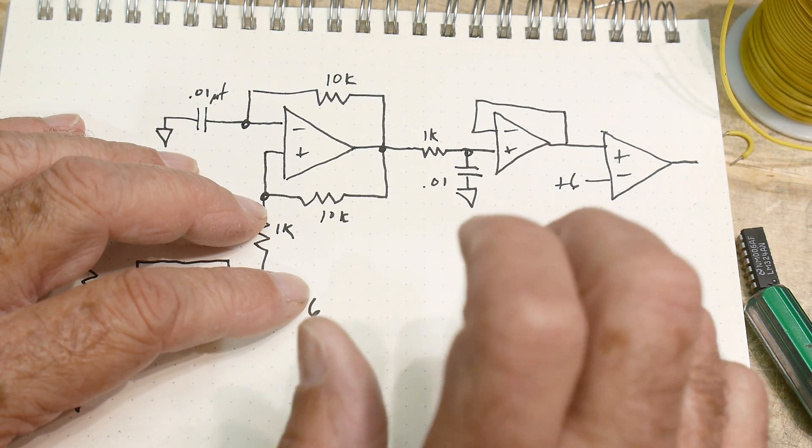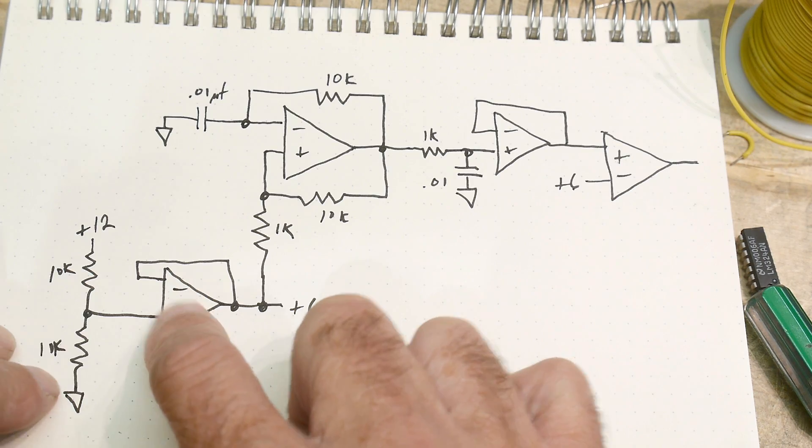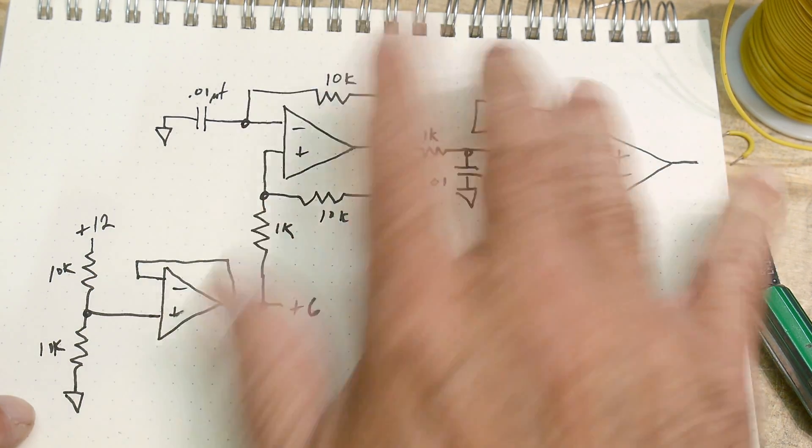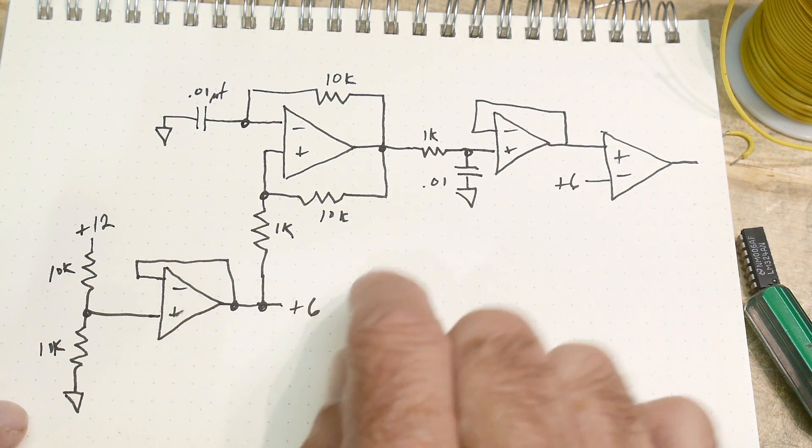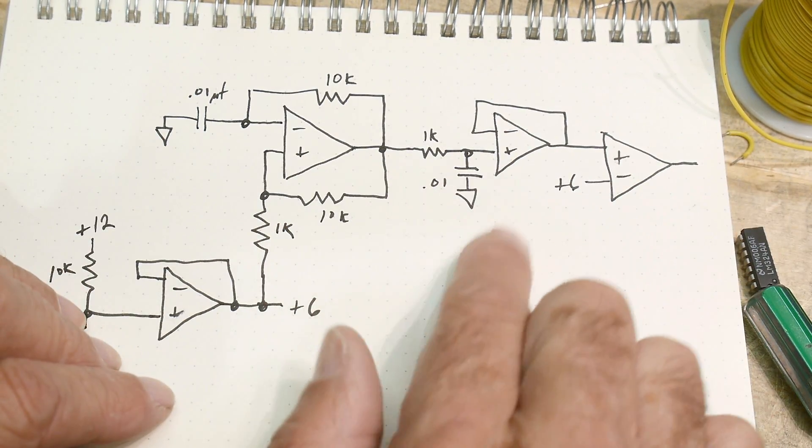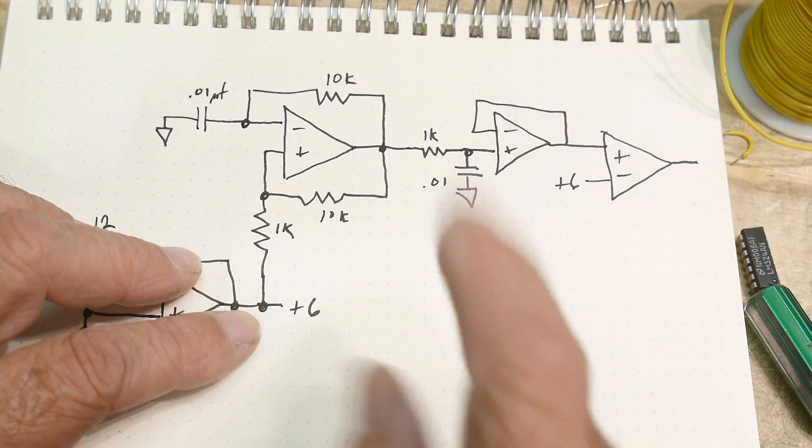I'm going to use one of the op amps just to generate the plus 6 rail. You don't need it in this application but I wanted to show you this technique because you might find you need to calculate how much return path the 6 volts will see, and sometimes you find out it's actually quite a bit.